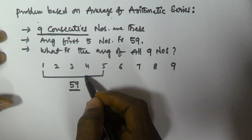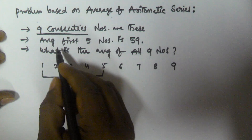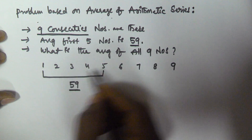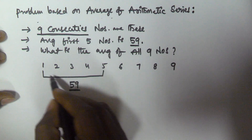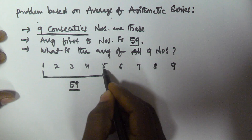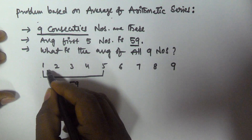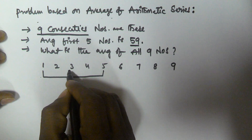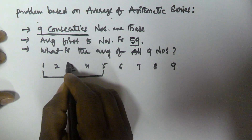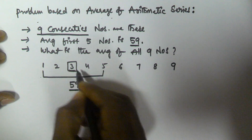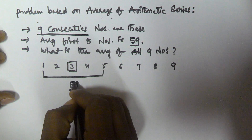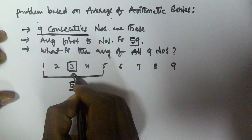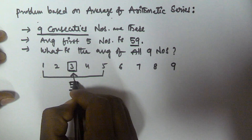The average of an arithmetic series is going to be the middle number. The average of the first five numbers is 59, so the average of these five consecutive numbers is the middle number — that is the third number. So the third number is 59.